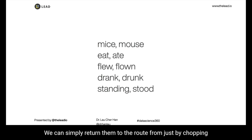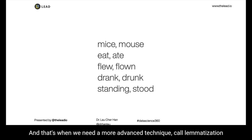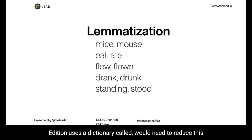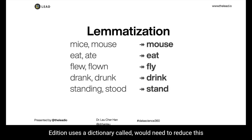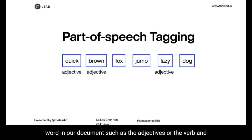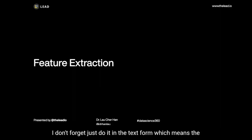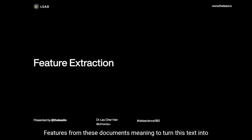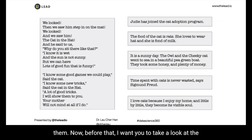We can't simply return those words to their root form just by chopping away a few characters, and that's when we need a more advanced technique called lemmatization. Lemmatization uses a dictionary called WordNet to reduce words to their root forms. Lastly, we perform part-of-speech tagging to identify the role of each word in our document — such as adjectives, verbs, and nouns. Now that we have pre-processed our documents, they are still in text form, which means computers are still unable to process them and extract information just yet. What we need to do next is extract features from these documents — turning text into computational forms so we can perform further analysis.